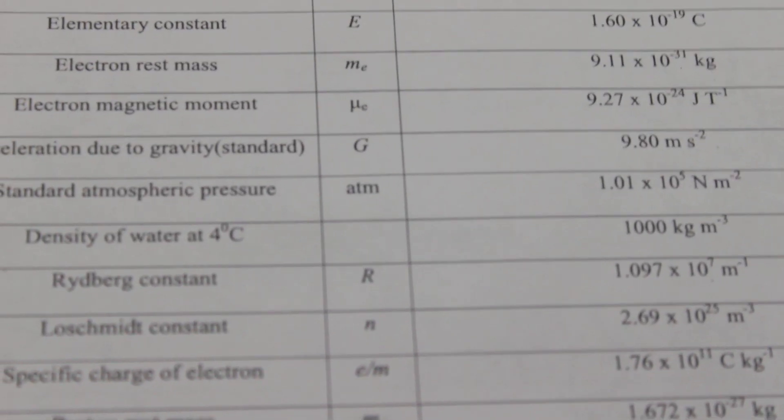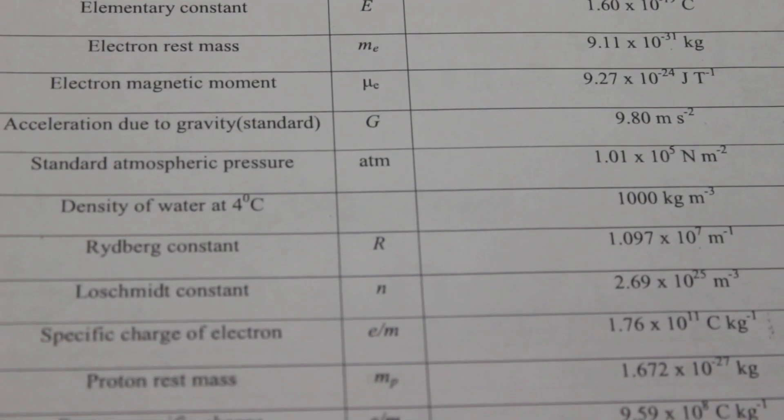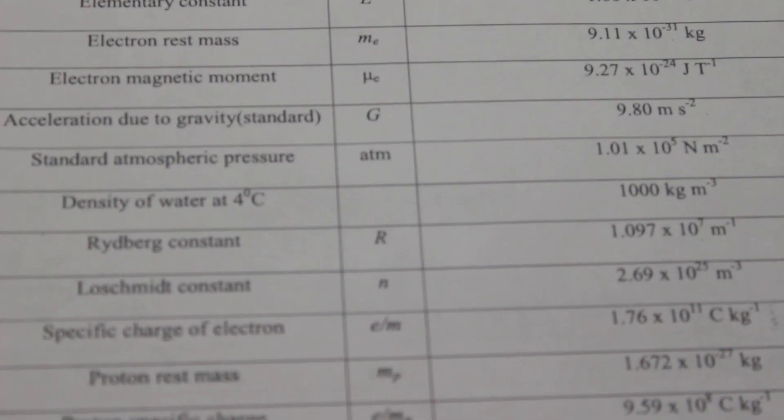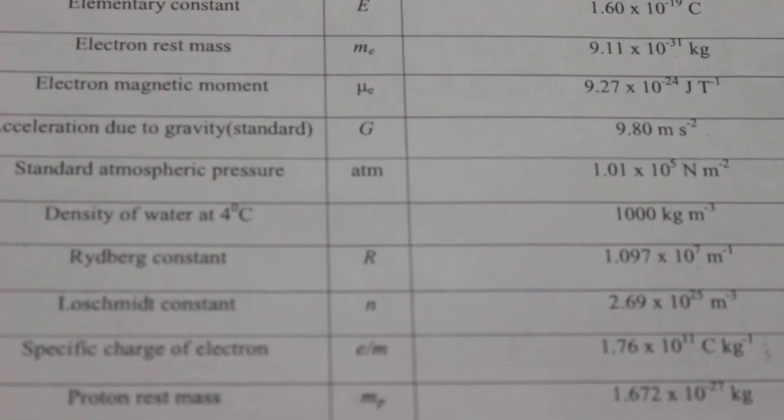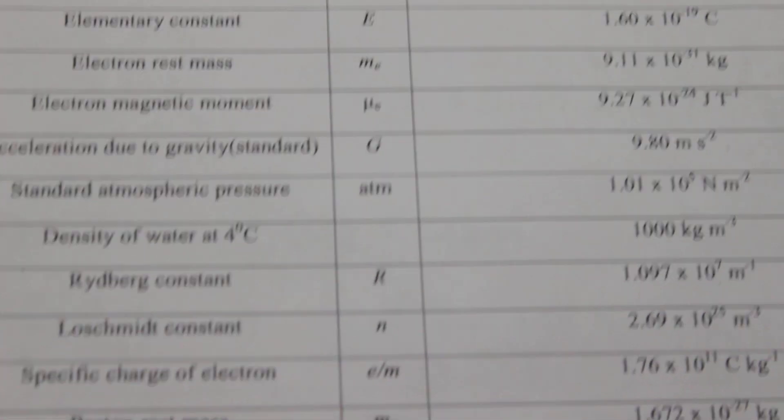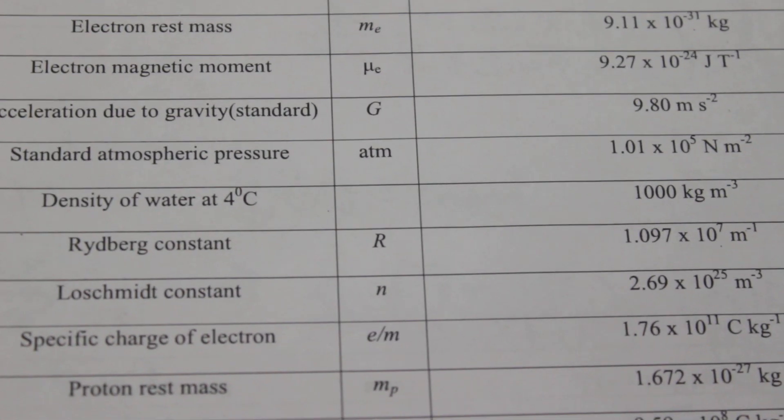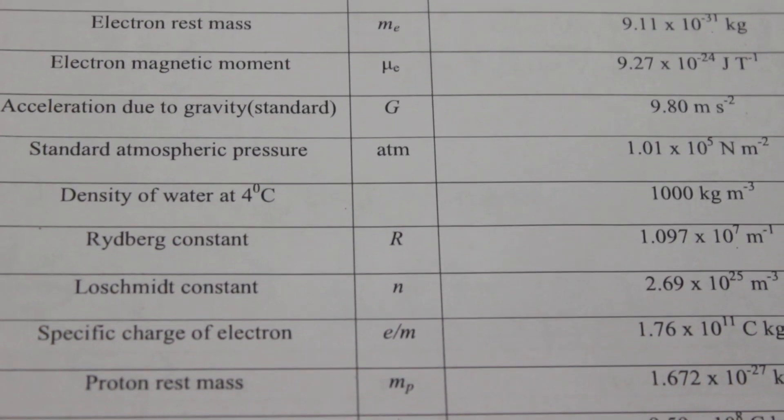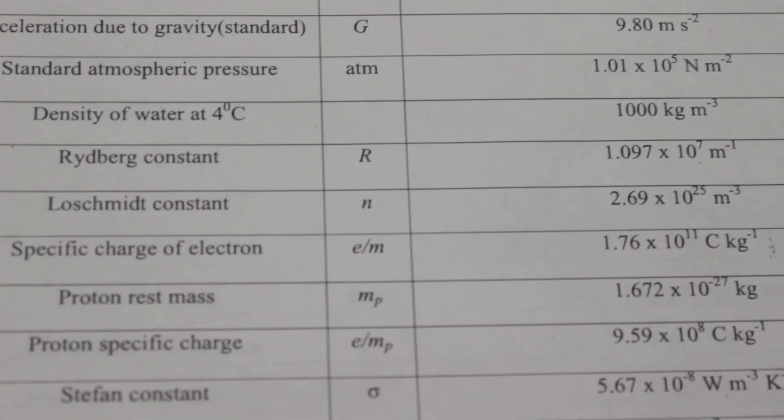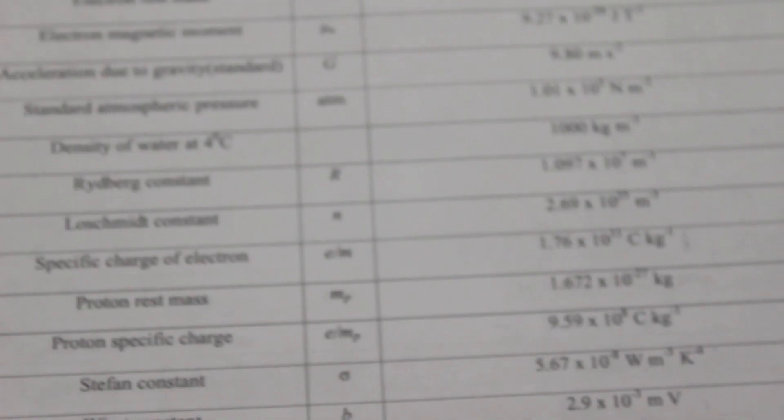Next, elementary constant capital E, that is 1.6 times 10 to the power minus 19, that is the charge of an electron. Next, electron's rest mass denoted by M subscript E, that is 9.11 times 10 to the power minus 31 kg, that is electron's mass. Electron magnetic moment mu E, 9.27 times 10 to the power minus 24. Acceleration due to gravity, small g, 9.80 meters per second squared.